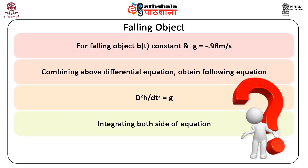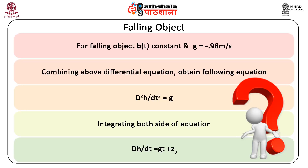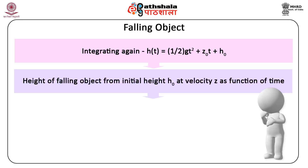Integrating both sides of the equation, we obtain dh/dt = gt + z0. Integrating again, we get h(t) = (1/2)gt² + z0·t + h0. This equation states that the height of a falling object from initial height h0 at initial velocity z0 is a function of time.